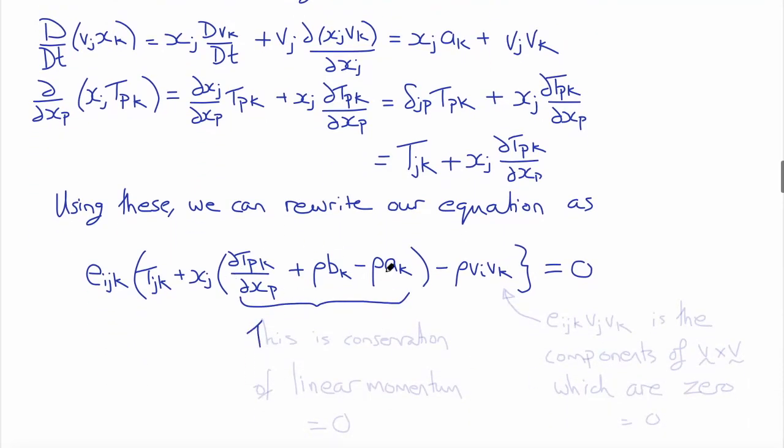Now if you look at this term here, it's multiplied by XJ, we can see that this is in fact the conservation of linear momentum. By conservation of linear momentum, this expression is zero, because these two terms equal the inertial force.